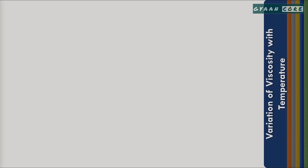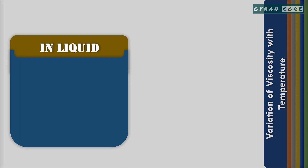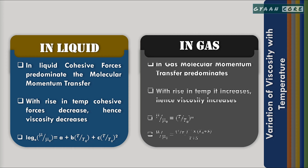Now we will discuss the variation of viscosity with temperature. Viscosity depends on the cohesive forces and molecular momentum transfer. In liquid, the cohesive forces predominate the molecular momentum transfer, and with the increase in temperature, cohesive forces decrease, resulting in a decrease in viscosity. On the other hand, in case of gas, the molecular momentum transfer predominates, and with the increase in temperature, the molecular momentum transfer increases, resulting in an increase in viscosity. The empirical formulas with respect to the variation of viscosity with temperature for both liquid and gases are as shown.